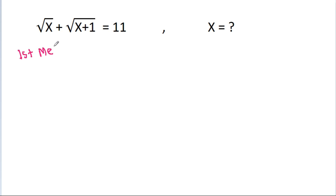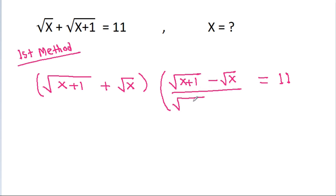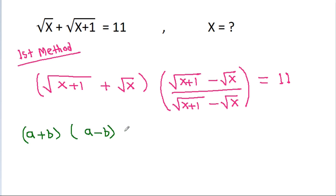The first method: we have a square root of x plus 1 plus a square root of x is equal to a given value. If we multiply it with a square root of x plus 1 minus a square root of x, divided by a square root of x plus 1 minus a square root of x, then we use the identity a plus b times a minus b is equal to a squared minus b squared.